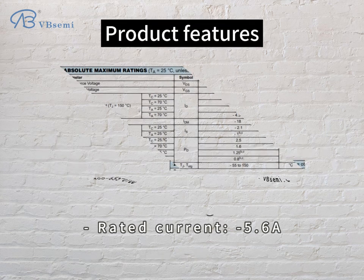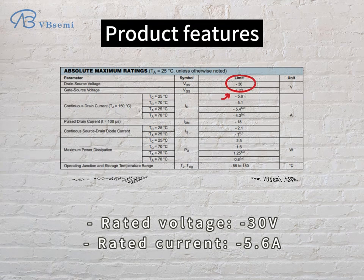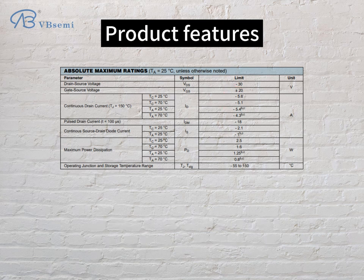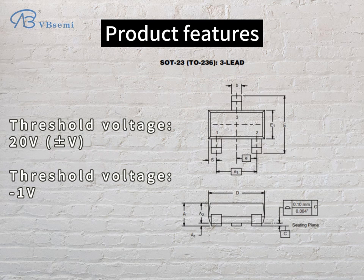Product features: Rated voltage -30V, rated current 5.6A. Threshold voltage VGS=20V, threshold voltage -1V.